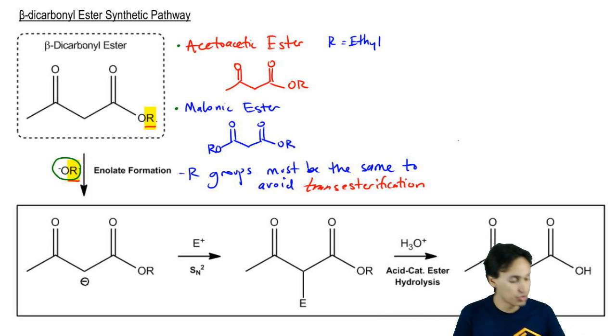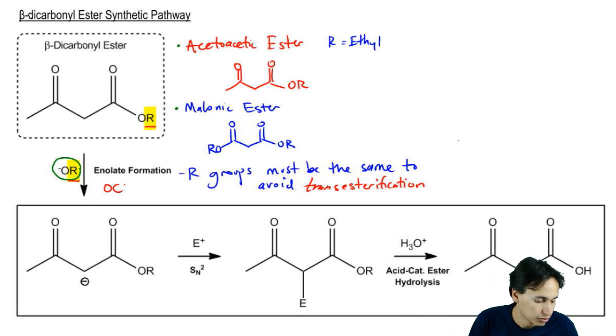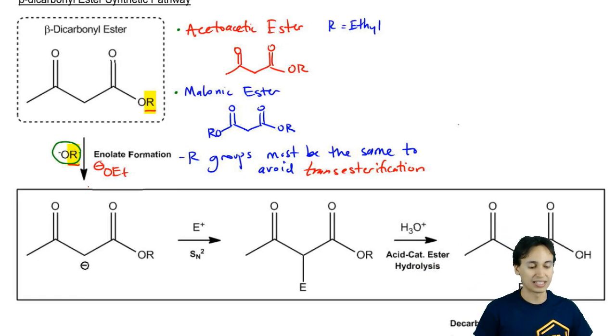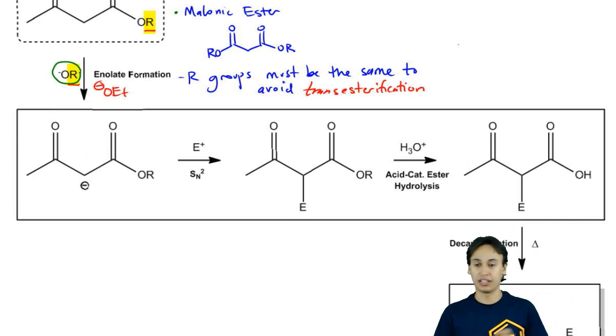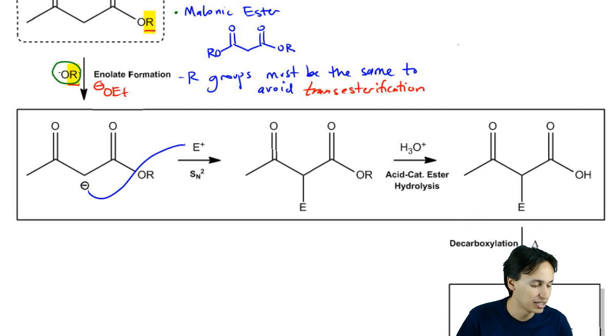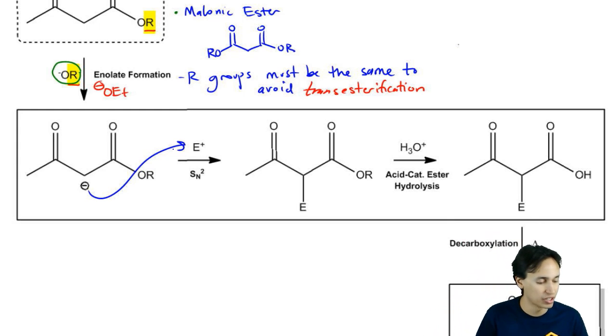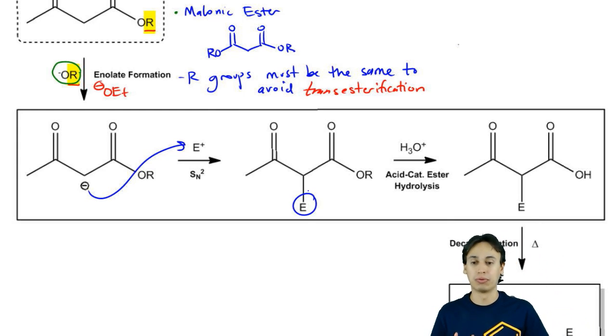Since R is equal to ethyl, usually the base that we're using is OEt negative. That's going to give us an enolate. That enolate can do something very familiar, which is that it can attack an electrophile through an SN2 reaction or any other mechanism that would contribute to the attack of an electrophile. Now I have my electrophile here. Perfect. But we've got a problem.